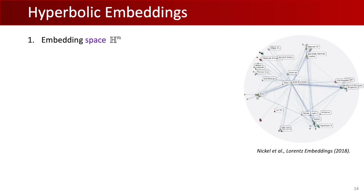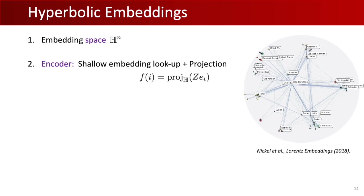To generalize to hyperbolic space, I'll describe the model by Nickel, one of the first in hyperbolic embeddings, though note there are many different ways to learn graph embeddings in hyperbolic spaces. The encoder, which maps vertices to hyperbolic space, is a simple embedding lookup that assigns a point in hyperbolic space to each vertex ID. In practice, it's also common to add a projection onto the manifold for numerical stability and to ensure points remain on the manifold after a gradient step.